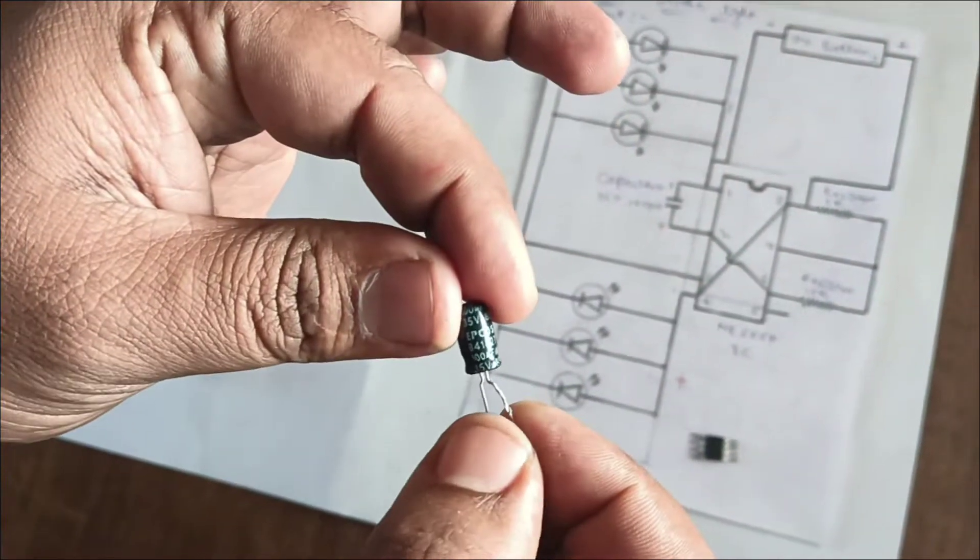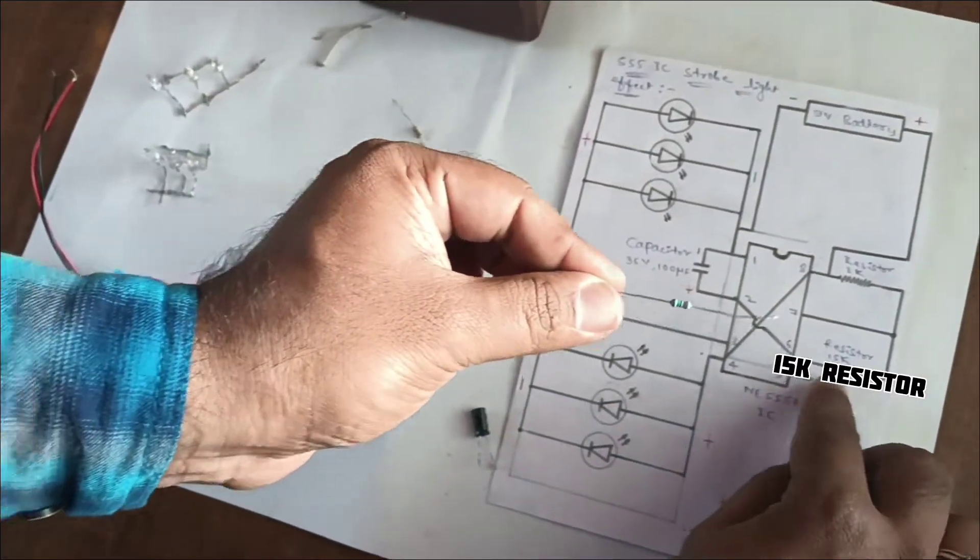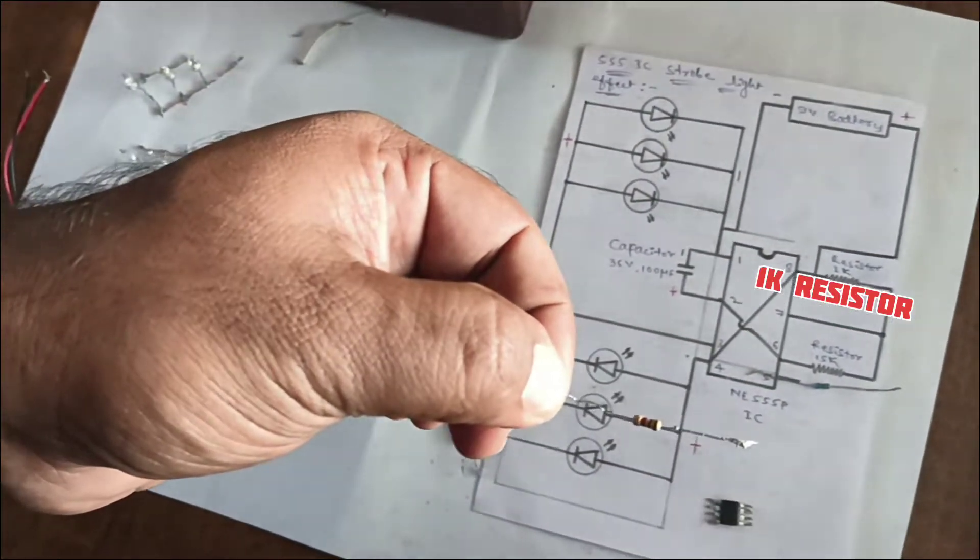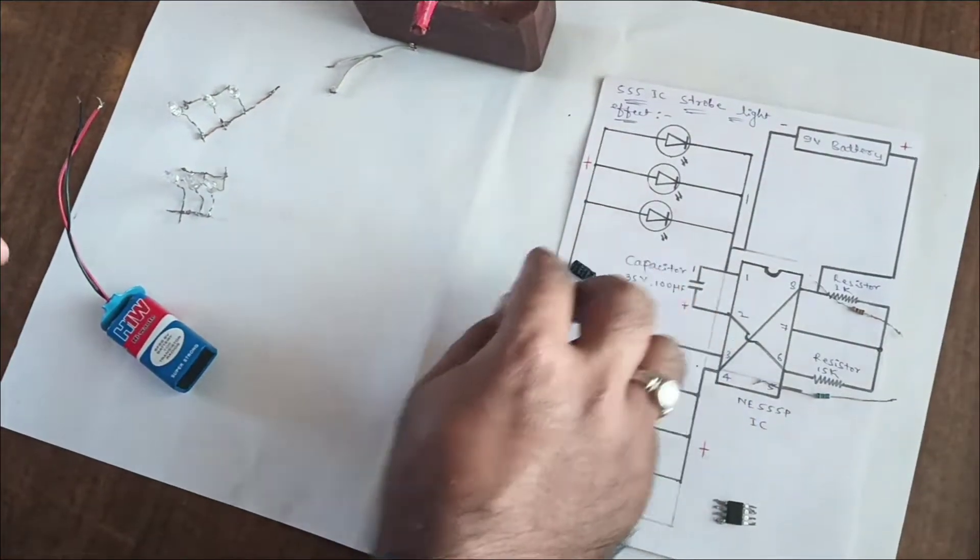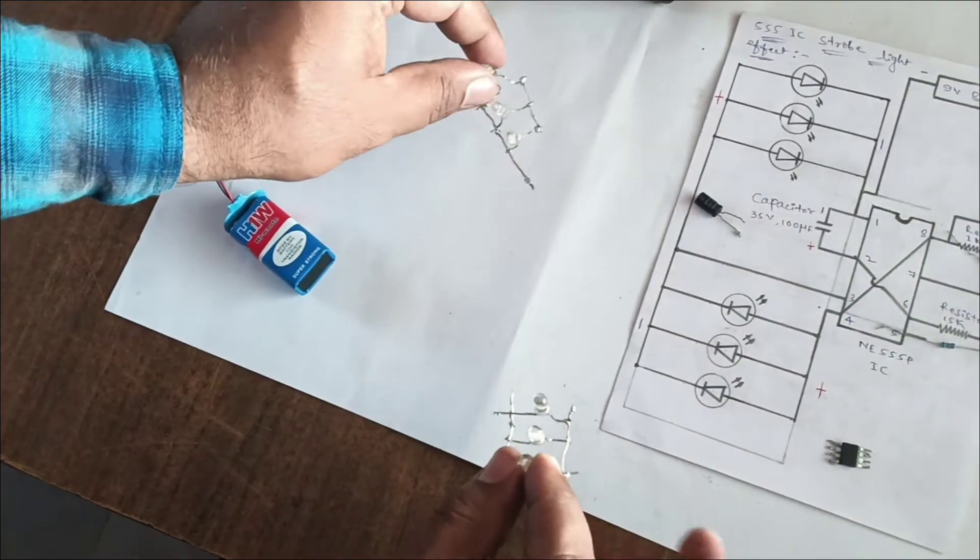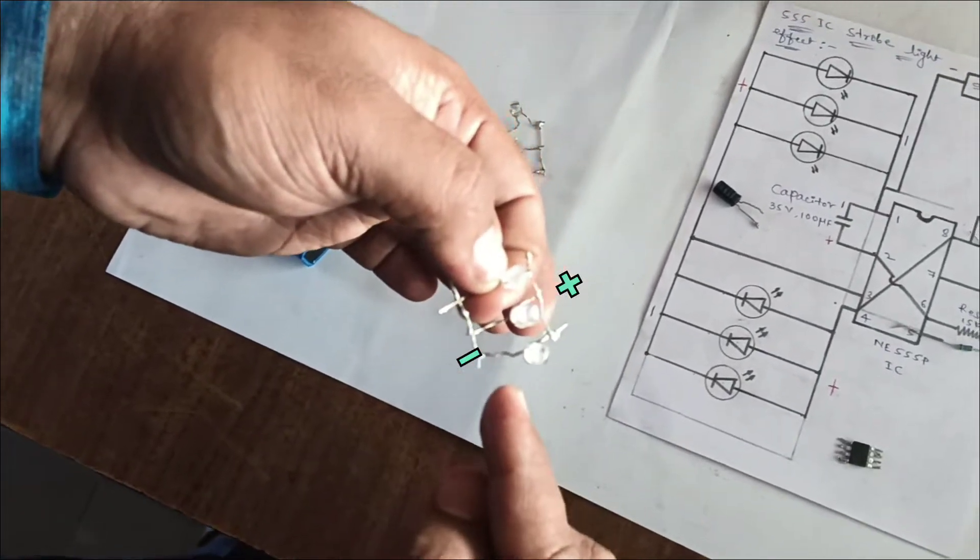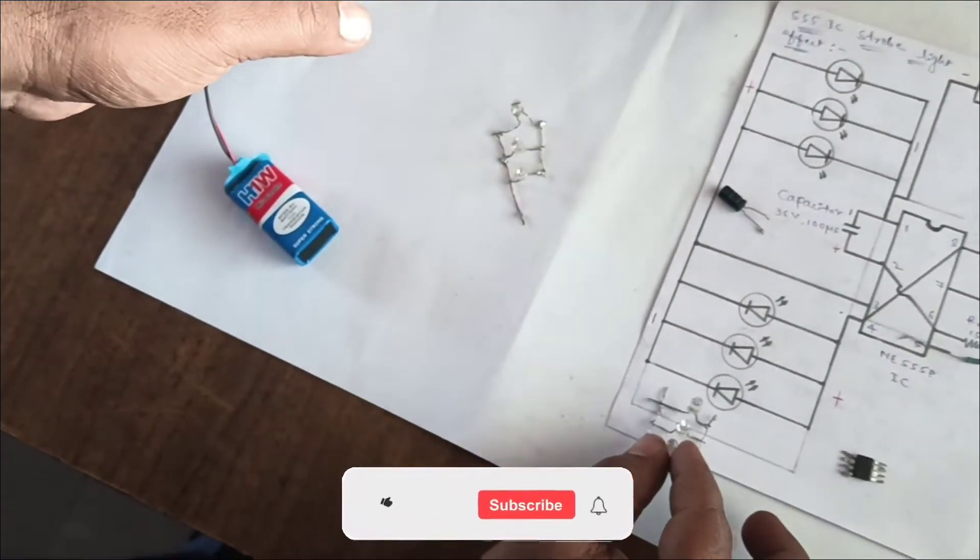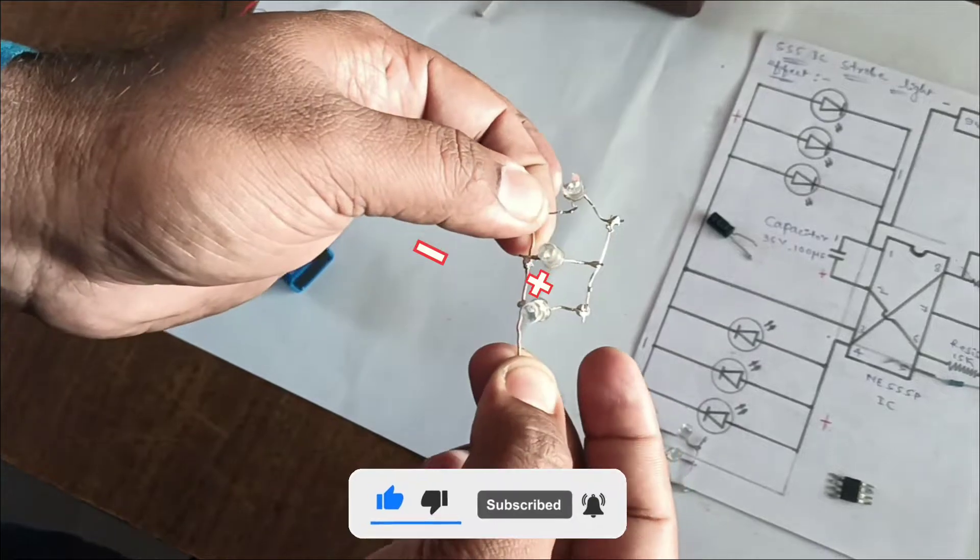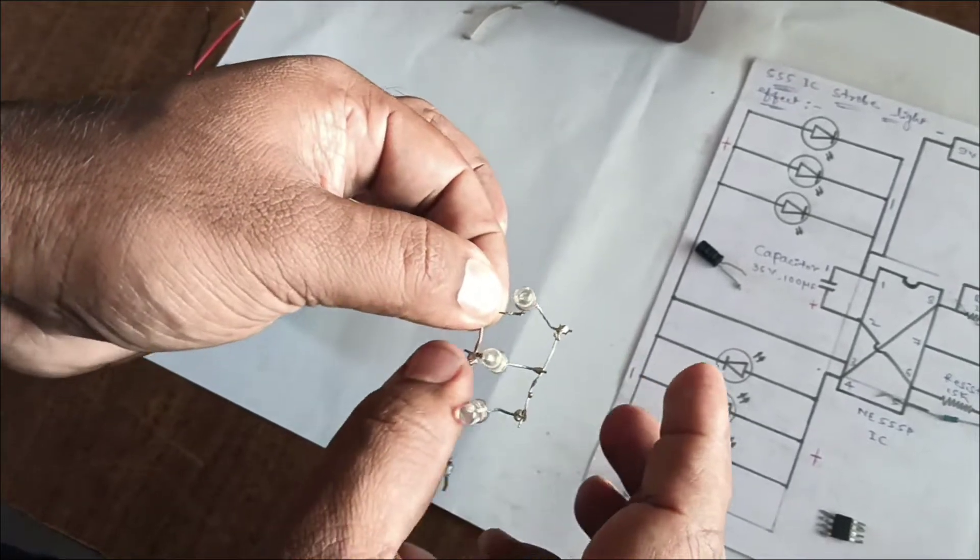We're using a 35 volt 100 microfarad capacitor. Next, the resistors: we have a 15 kilo-ohm resistor and a 1 kilo-ohm resistor. Here we use three LEDs in one group, and we've made two groups total. These are the anodes and these are the cathodes. Similarly, we made another set of three 5mm LEDs with their anodes and cathode side.